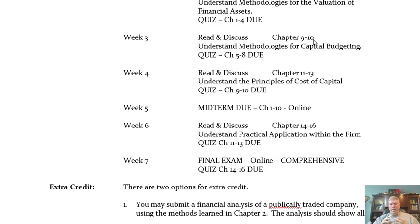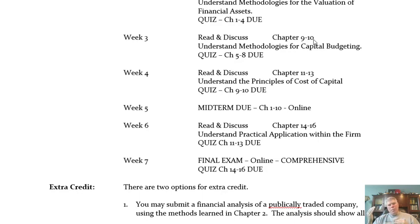In week four, I'd look at chapters eleven through thirteen — that's cost of capital, where the risk piece starts coming in and we begin to quantify risk. I'd make sure quizzes for chapters nine and ten are done. Sometime in week four or five, I'd knock out the midterm. The midterm covers chapters one through ten — it's an online multiple choice test, take your time through it. You get one shot at the midterm, but you can take it at any time in the semester. I'd target week five, study up, maybe redo some quizzes on weaker chapters, then take the midterm.